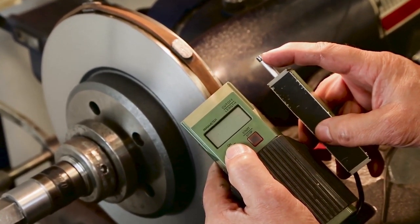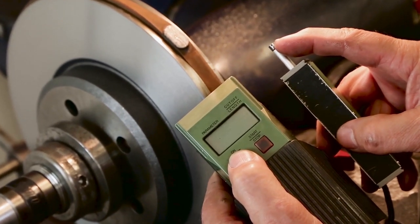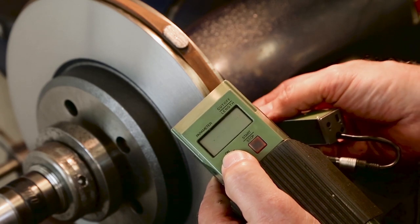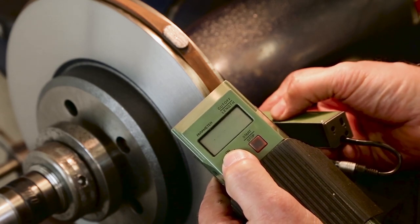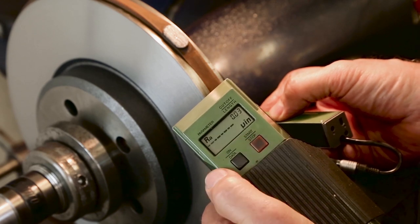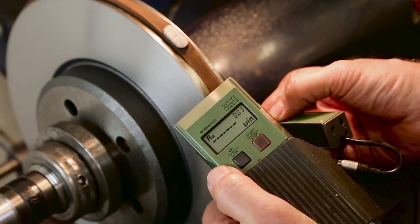This profilometer uses a small diamond stylus right in the tip to slide across the surface and give us that reading. So what we'll do is lay that diamond stylus across the inside of the rotor surface and start the process.